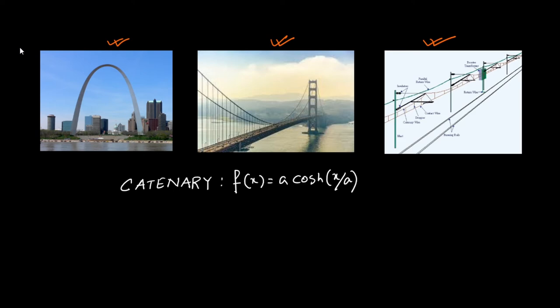Hyperbolic sine function arises in the gravitational potential of a cylinder, for example, or in the calculation of Roche limits. So you can find these two hyperbolic functions — hyperbolic cosine and hyperbolic sine — in many mathematical contexts.